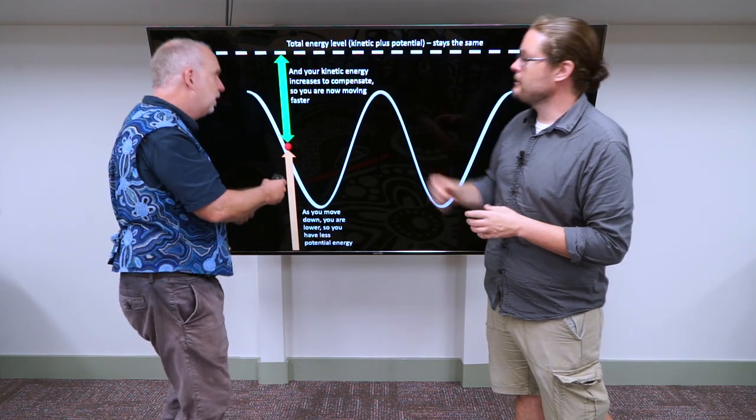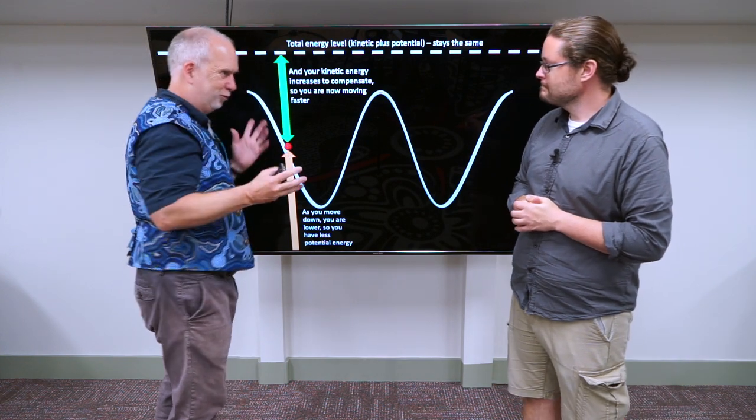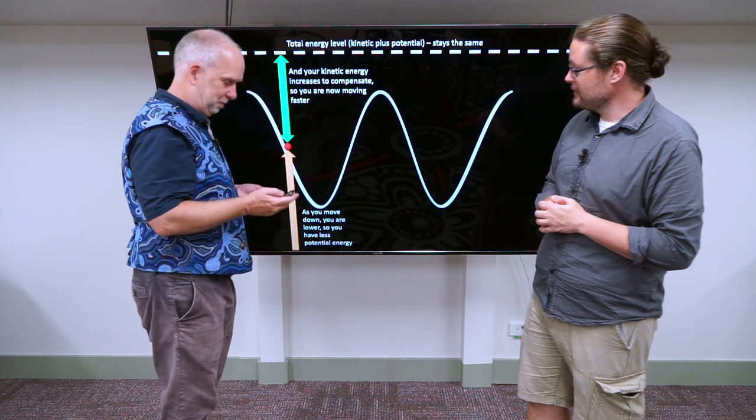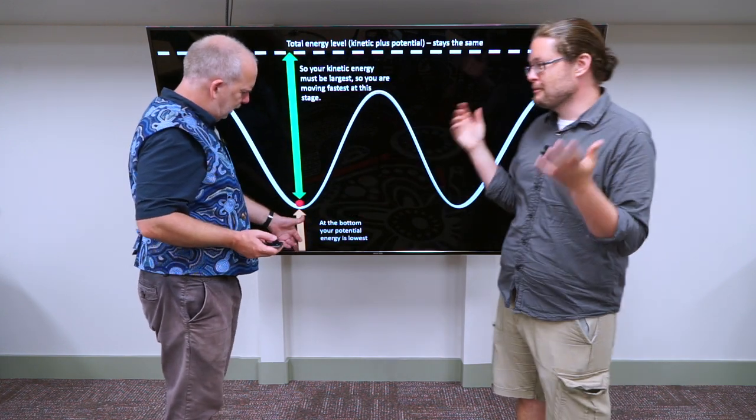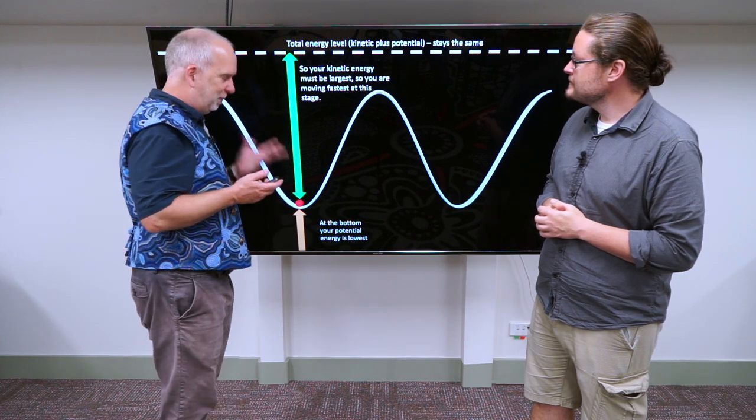now the potential energy is less because you're lower down. Because it depends only on how high you are. But that means there's more, your total energy remains the same, because it always remains the same, law of conservation of energy. And so you've now got more kinetic energy, so you're going faster. And at the bottom, there's only a small bit of potential energy, lots of kinetic energy. So that means you're going pretty fast.